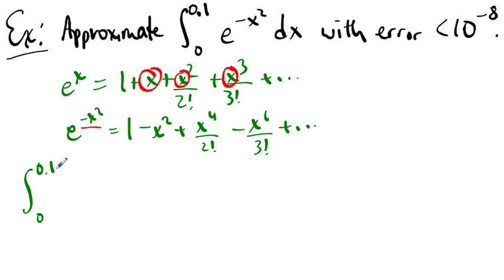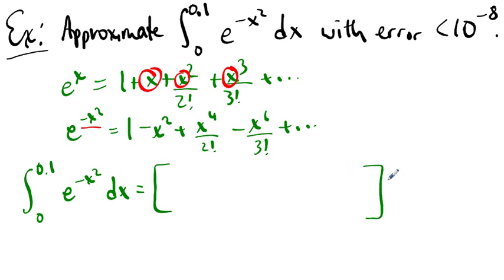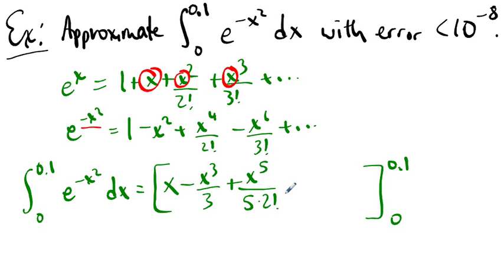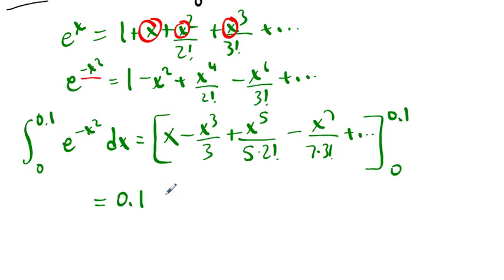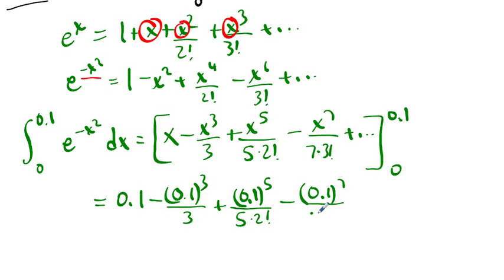So the integral from 0 to 0.1 of e^(−x²) dx is the antiderivative evaluated term by term, then substituting in bounds and subtracting. Taking antiderivatives term by term is messy but manageable. Substituting 0.1 and subtracting 0 gives: 0.1 − (0.1)³/3 + (0.1)⁵/(5·2!) − (0.1)⁷/(7·3!) + ...